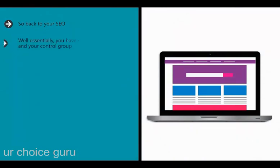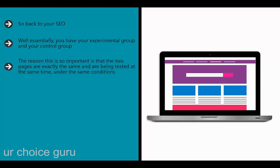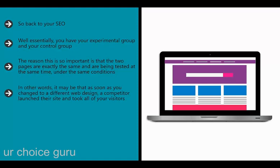Back to SEO: you have your experimental group and your control group. The experimental group is where you've introduced a new header or change; the control group is where you've left everything as it was. The reason this is so important is that the two pages are exactly the same and are being tested at the same time under the same conditions. If you only change the page for a short time and change it back, you can't account for confounding variables such as naturally peaking and waning interest, global events impacting internet usage, or a competitor launching their site and taking your visitors.